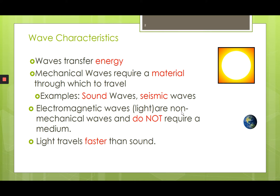However, light, which is also known as an electromagnetic wave, is non-mechanical. It doesn't require a medium. This is the reason why we can get light from the sun. Light travels faster than sound, which is the reason why when we have lightning and thunder, we actually see the lightning before we hear the thunder.